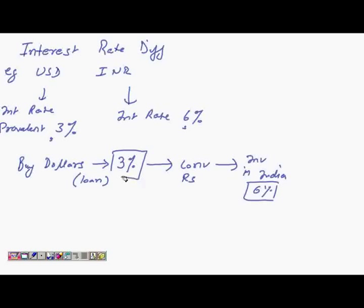The interest rate prevalent here means that loans and the investment rates are the same. So if this is prevalent in the market, an arbitrager will get an interest rate differential of 3%. So if you are an arbitrager, you would like to take a loan in the US at 3%, convert that into rupees, and invest in India at 6%.